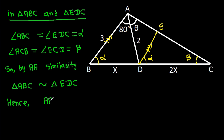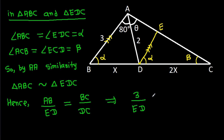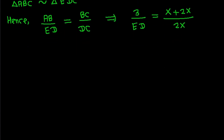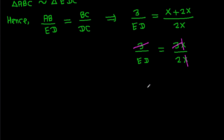Hence, AB over ED is equal to BC over DC. BC is equal to BD plus DC, which is x plus 2x. So, 3 over ED equals 3x over 2x. The x's cancel and the 3's cancel, giving 1 over ED equals 1 over 2, so ED equals 2.